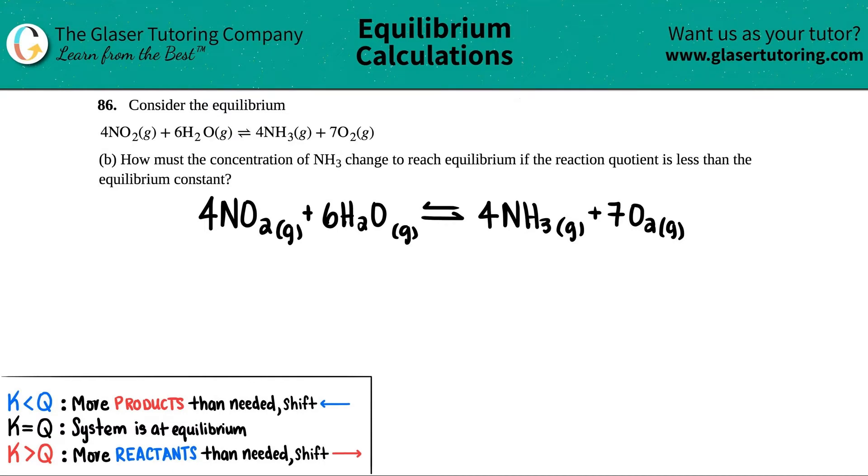Number 86. Consider the equilibrium, which they give you here, and I just rewrote it a little bit bigger. So we have 4 NO2 gas plus 6 H2O gas, which comes to equilibrium with 4 NH3 gas plus 7 O2 gas.